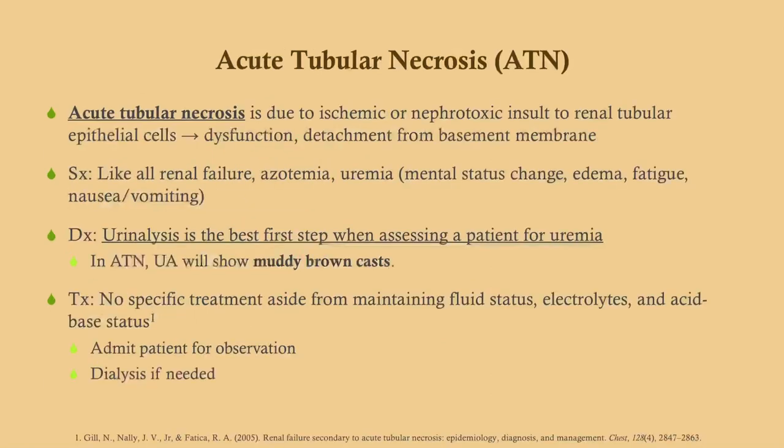Acute tubular necrosis (ATN) is due to ischemic or nephrotoxic insult to renal tubular epithelial cells. There's dysfunction and detachment of the tubular cells from the basement membrane, which impairs reabsorption of electrolytes and water. Like all renal failure, you can get azotemia and, if severe enough, uremia. Urinalysis is the best first step for diagnosis.